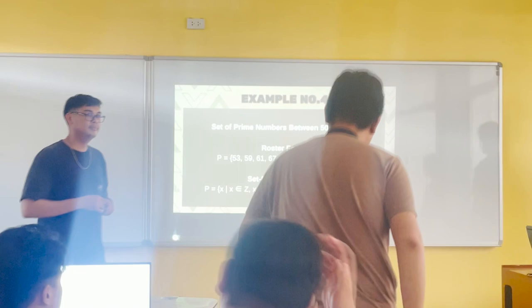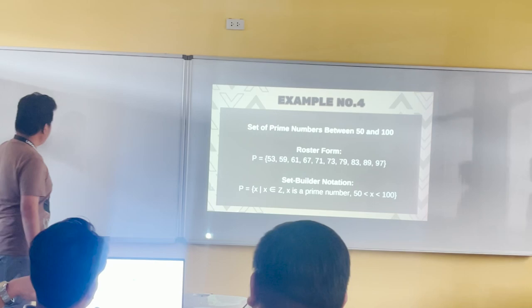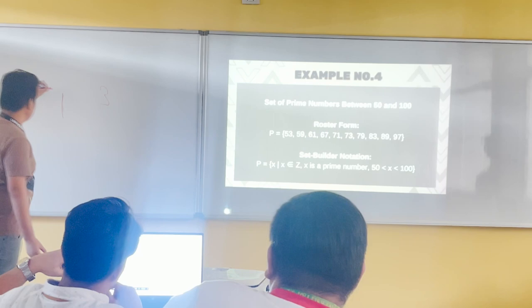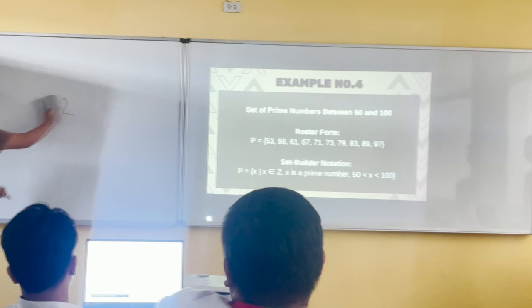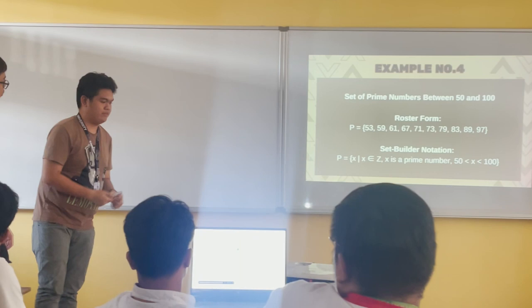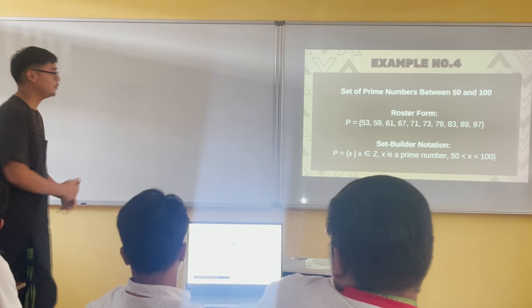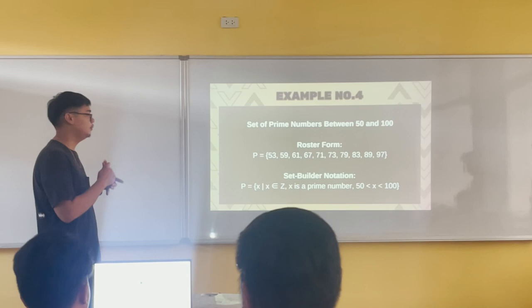Basically, prime numbers are numbers that are divisible only by 1 and themselves. For example, 3 is divisible only by 1 and 3. Similarly, 2 is divisible only by 1 and 2. Any number divisible by something else is considered composite. So 51 — is 51 a prime number?